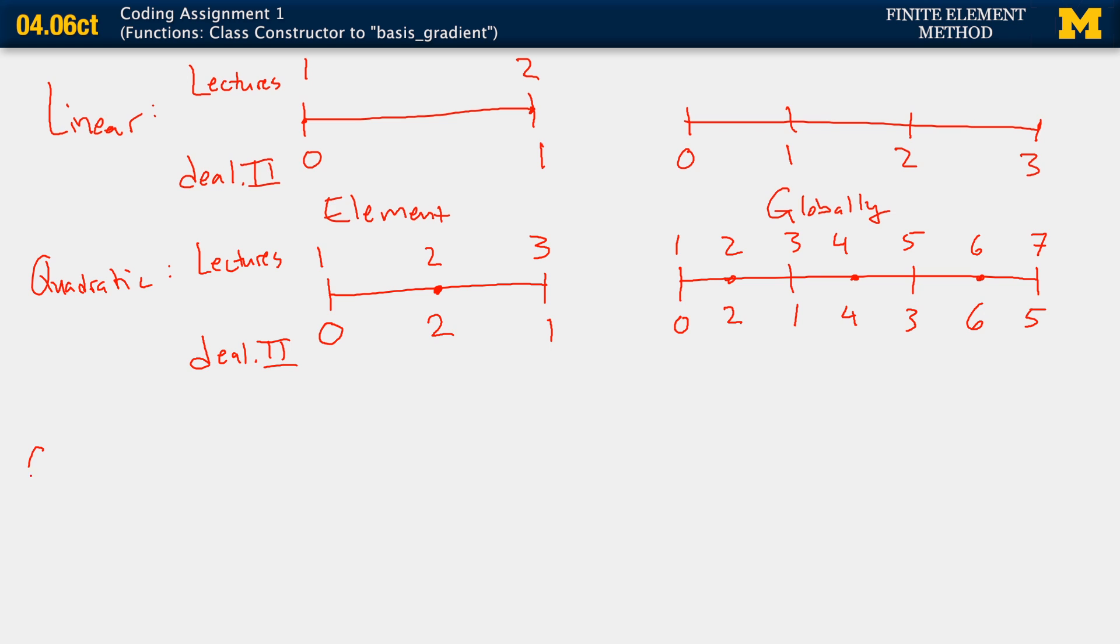And then cubic follows that same pattern. All right. So we have our two mid-side nodes now. Again, in the lectures, we went sequentially 1, 2, 3, 4. In deal.II, again, the left node is 1. The right node is, or sorry, the left node is 0. The right node is 1. And then 2, 3.